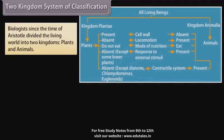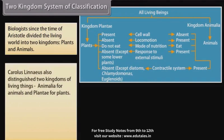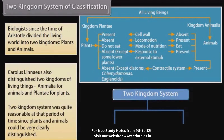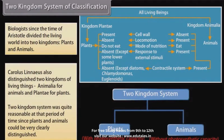In the 2 Kingdom System of Classification, biologists since the time of Aristotle divided the living world into two kingdoms: plants and animals. This two kingdom system was quite reasonable at that period of time, since plants and animals could be very clearly distinguished.